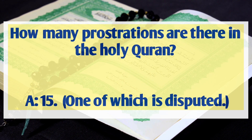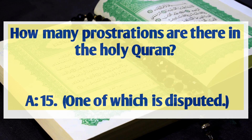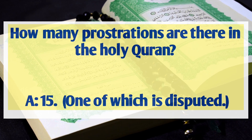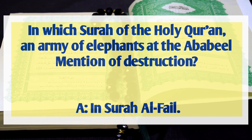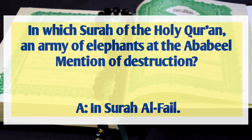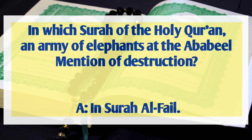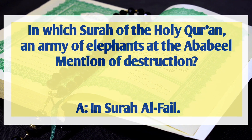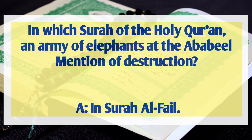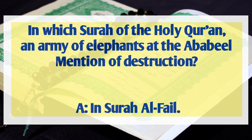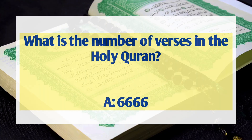How many prostrations are there in the Holy Quran? Answer: 15. In which surah of the Holy Quran is an army of elephants and the Ababil birds mentioned in destruction? Answer: Surah Al-Feel. What is the number of verses in the Holy Quran? Answer: 6,666.